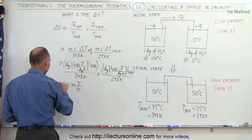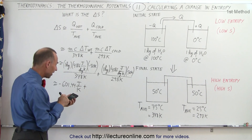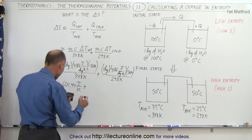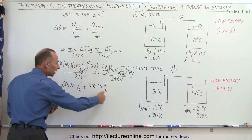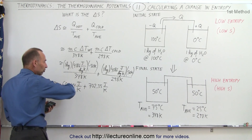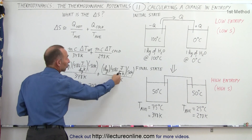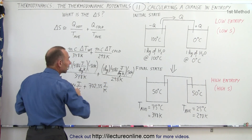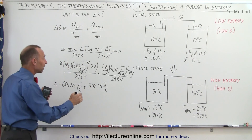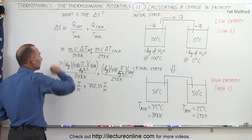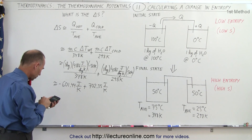That first term is a negative quantity because we have a negative 50 K there. On the second term we get 4186 × 50 ÷ 298, which gives us +702.35 joules per Kelvin. The positive quantity will always be bigger than the negative quantity because pulling heat from the hot reservoir is done at a higher temperature — we divide by a bigger number — while adding it to the cold reservoir is at a colder temperature, so the magnitude of the positive term is always larger. The sum of the two will always without exception be a positive value.